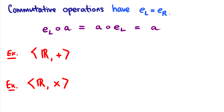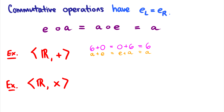If an operation is commutative, then the left identity equals the right identity, and we just drop the subscripts and call it E. So E operation A equals A operation E, which equals A. For example, with the real numbers under addition: six plus zero equals zero plus six, which equals six. With multiplication, the identity element is one: six times one equals one times six, which equals six, or A times E equals E times A equals A.